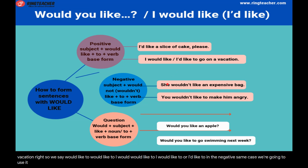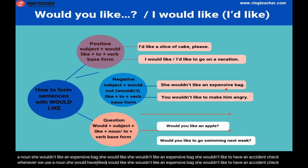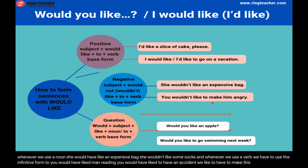For the negative, same structure applies. With a noun: 'she wouldn't like an expensive bag.' With a verb, you must use the infinitive with 'to': 'she wouldn't like to have an accident.' More examples: 'you wouldn't like to make him angry,' 'you wouldn't like to sing in public.'